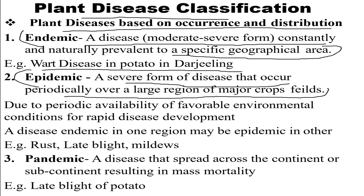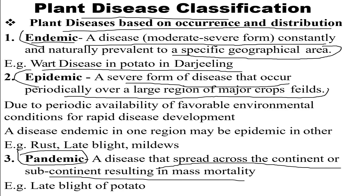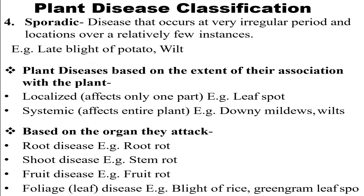If a disease occurs in a very small region it is known as endemic, whereas if that region expands to a bigger area it is known as epidemic. Pandemic is something that occurs universally or worldwide — a disease that spreads across continents or subcontinents, resulting in mass mortality and huge losses.